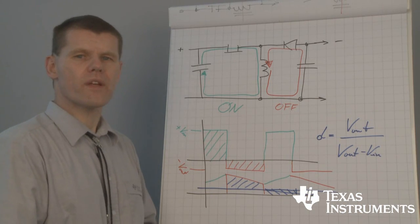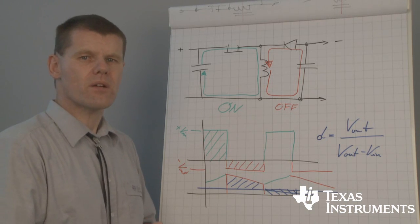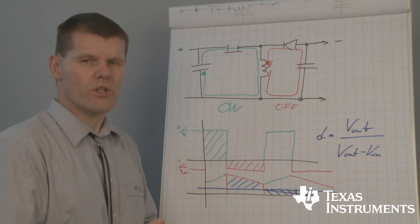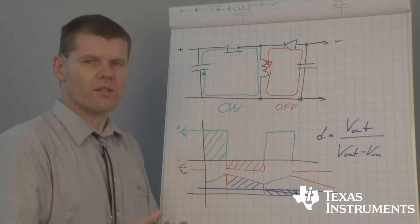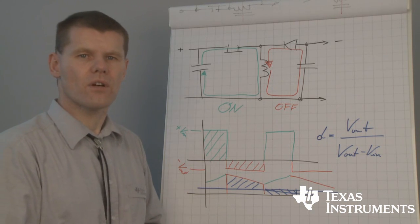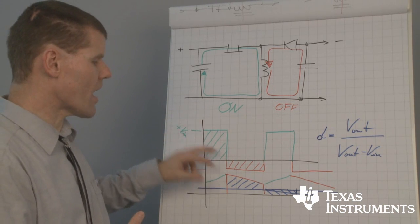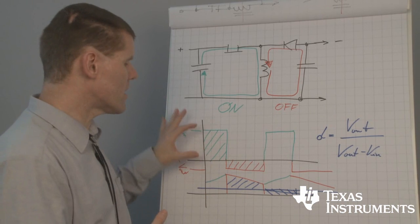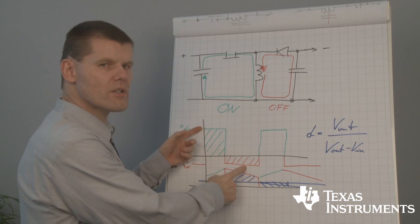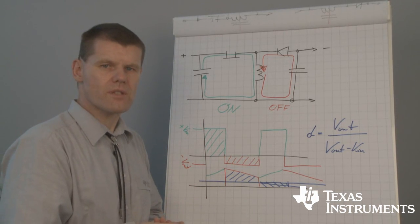But there is one important thing to know. At the buck converter, the semiconductors have to withstand the high input voltage. At the boost converter, the semiconductor has to withstand the high output voltage. But here at our inverter topology, the semiconductors must withstand both the high input voltage and the high output voltage — the sum of both voltages is seen at your semiconductors.